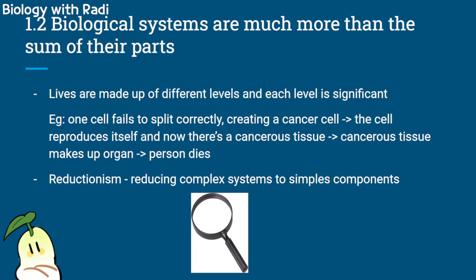Biological systems are much more than the sum of their parts. Life is made up of different levels, and each level is significant because one level can impact the next. For example, if one cell fails to split correctly — like mitosis doesn't go correctly — and it creates a cancerous daughter cell, the cell reproduces itself, creating cancerous tissue. That cancerous tissue could spread and cover a whole organ, making that organ dysfunctional, which could lead the person to die.